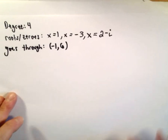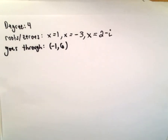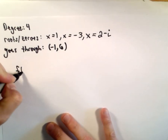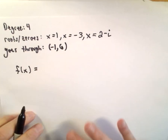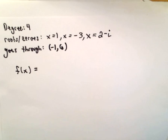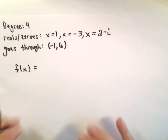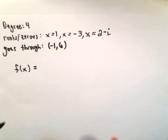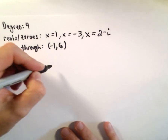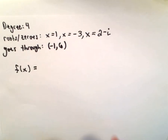I've just quickly jotted down all that information. So let's call the polynomial f of x. We know it's degree 4. The idea to go about these problems, when you're trying to find the equation, you're basically going to work backwards.